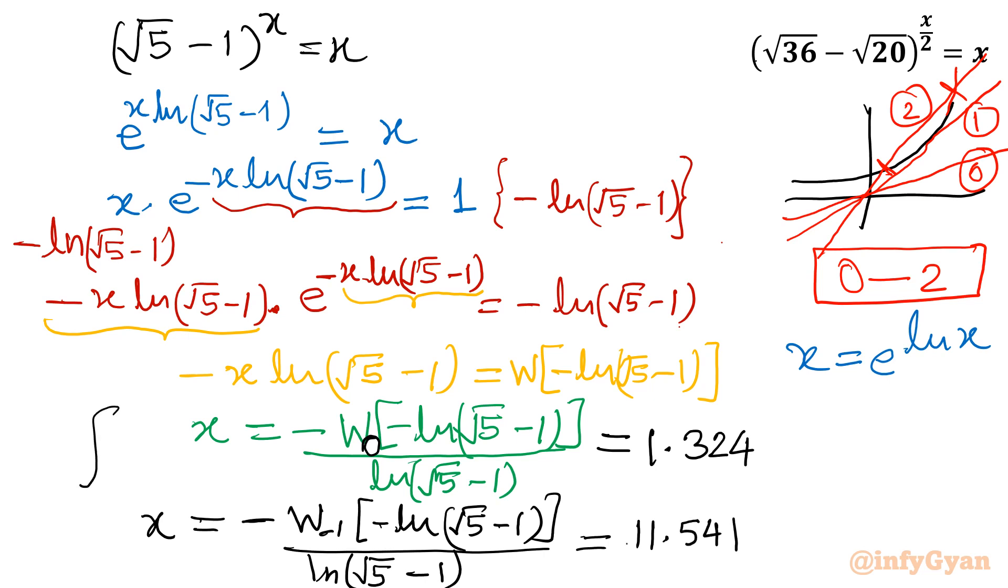See, both of the roots are coming from two branches, W zero and W minus 1. So that value is 1.324. So that means two solutions are there. Graph would be, line would be like this.